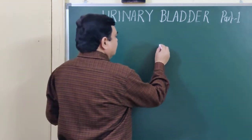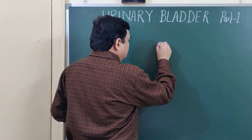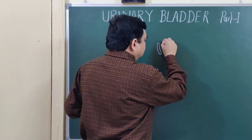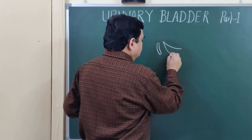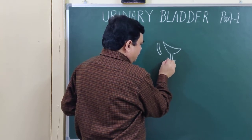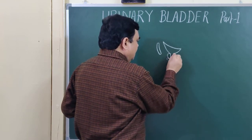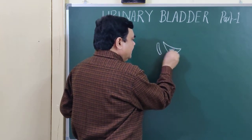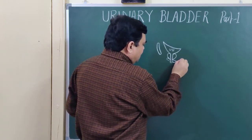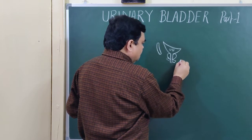Here is the diagram. This is the pubic symphysis. This is the prostate layer, this is the urinary bladder. Here is the urogenital diaphragm. This is the position of the perineal body.